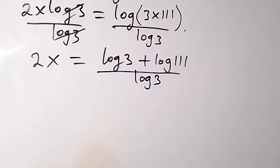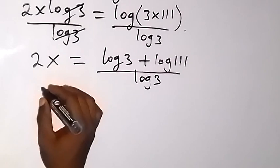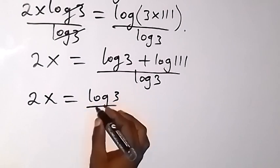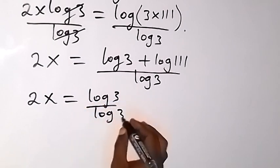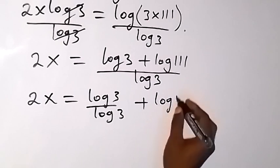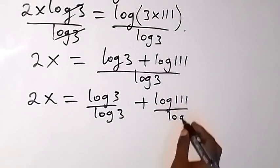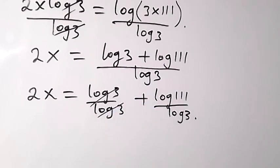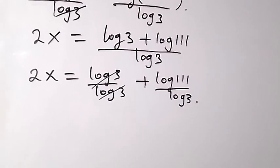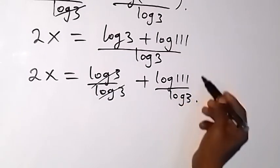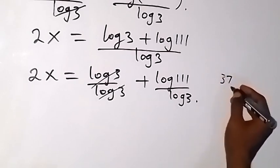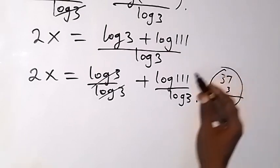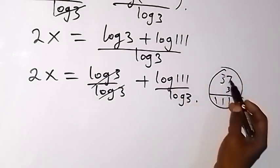this will give us log 3 plus log 111, then over log 3. From there, we can separate this fraction here and we have 2x which will then be equal to log 3 over log 3 plus log 111 over log 3. And from there, this will divide each other and we have 1. And also, we can express 111 as 37 multiplied by 3.